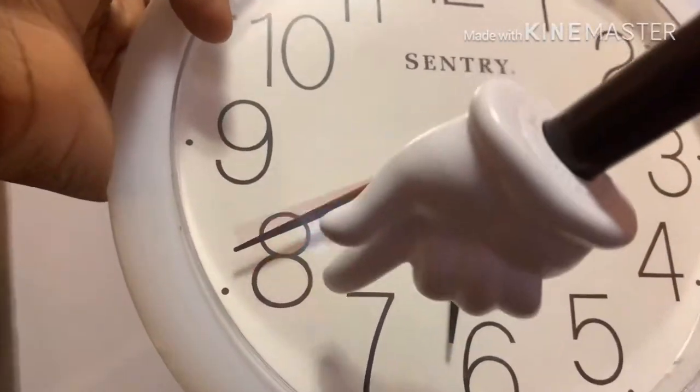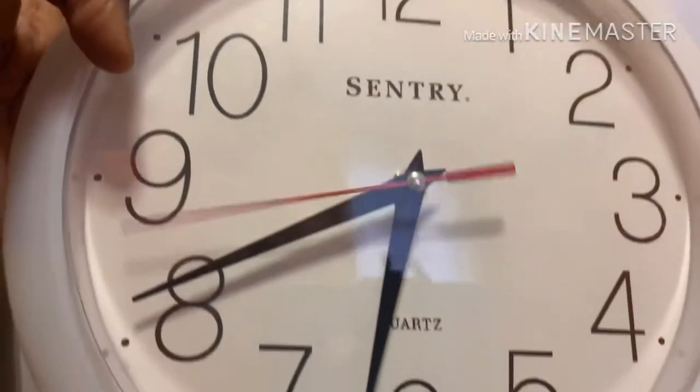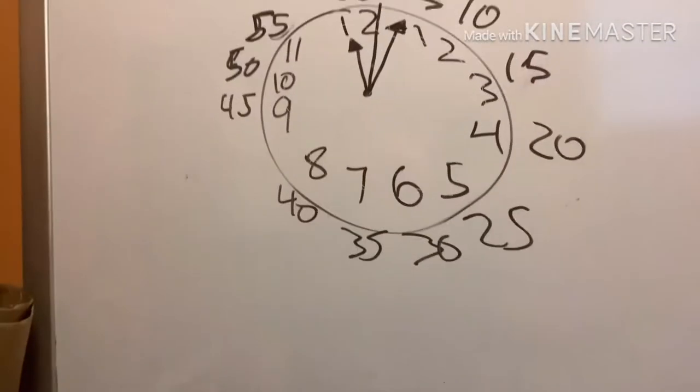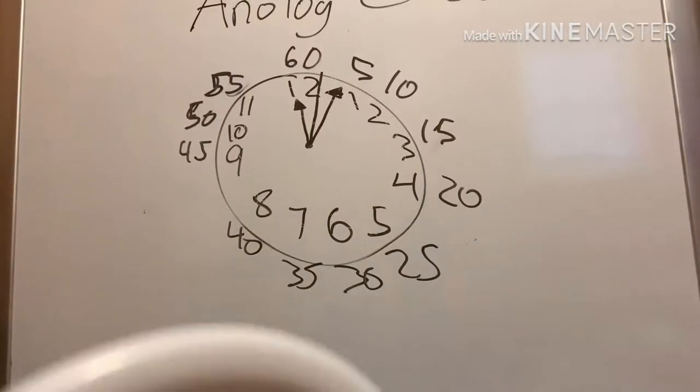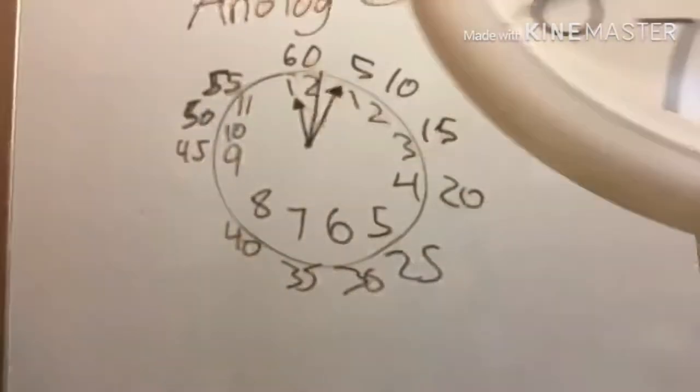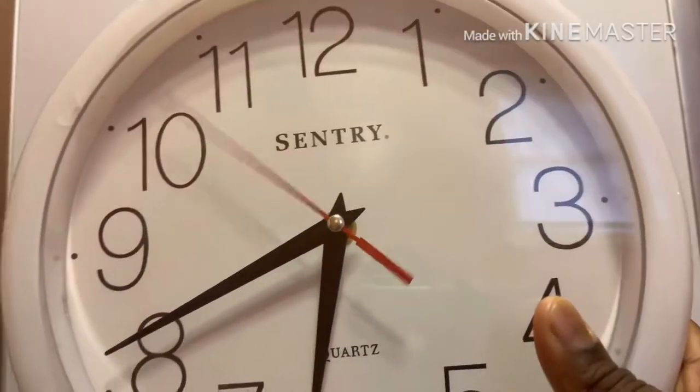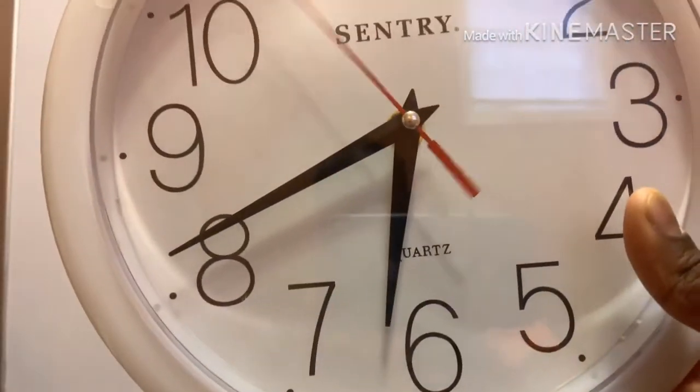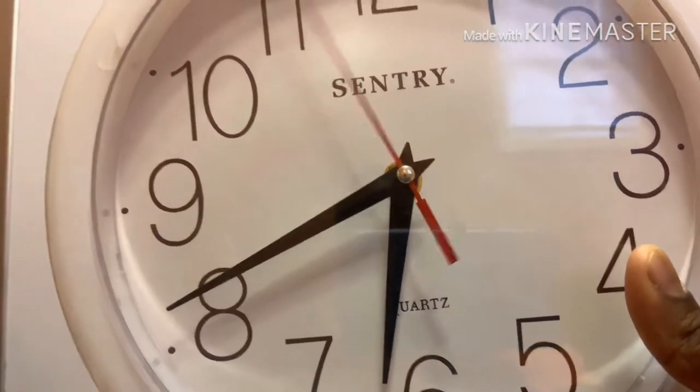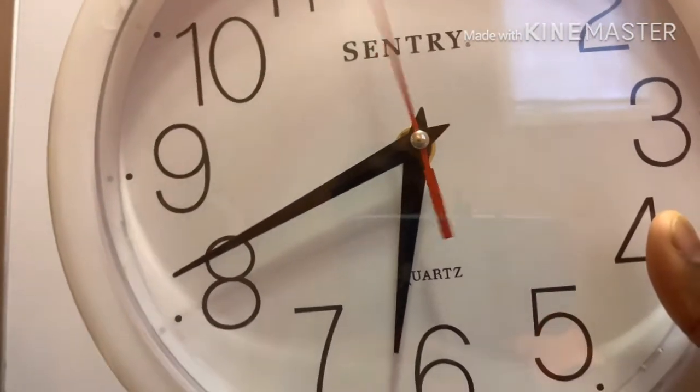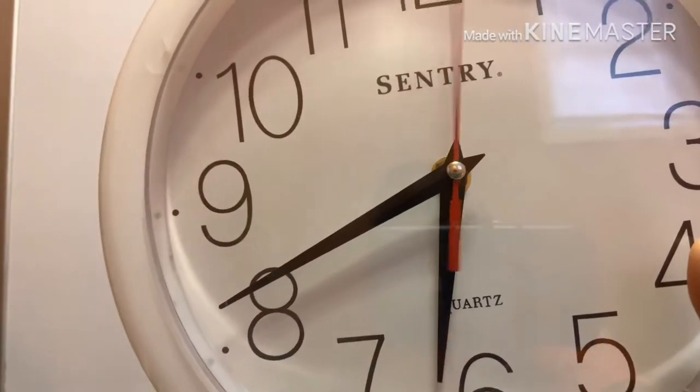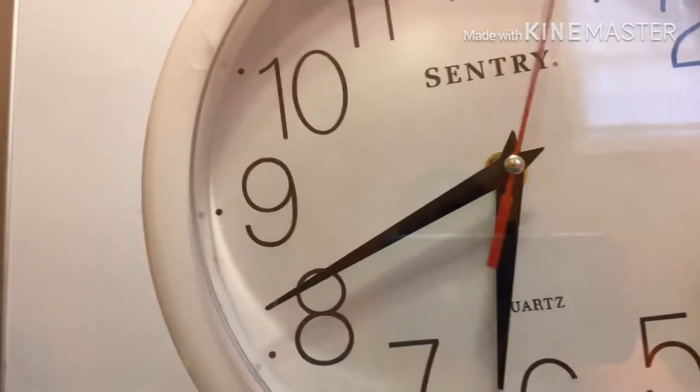Every time this red second hand goes around and hits the 12, the minute hand will just move by a little. Like as you can see up here, every single number from one to twelve is counted by tens, and if you look closely, you'll be able to see how the hand next to the eight moves.